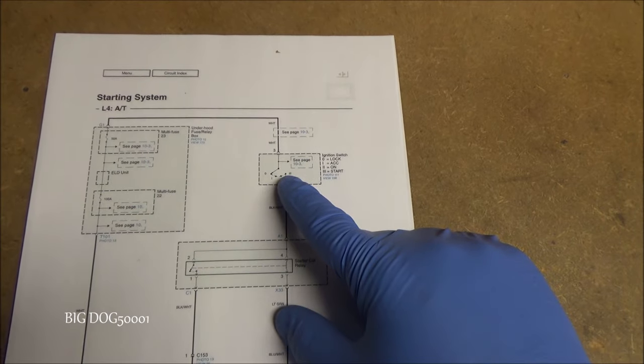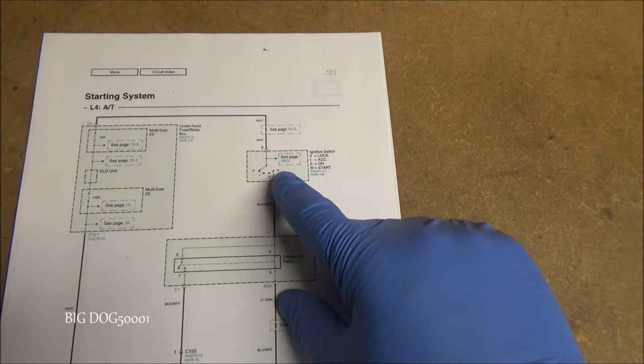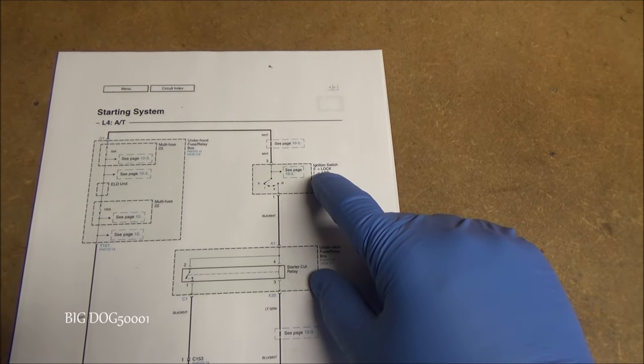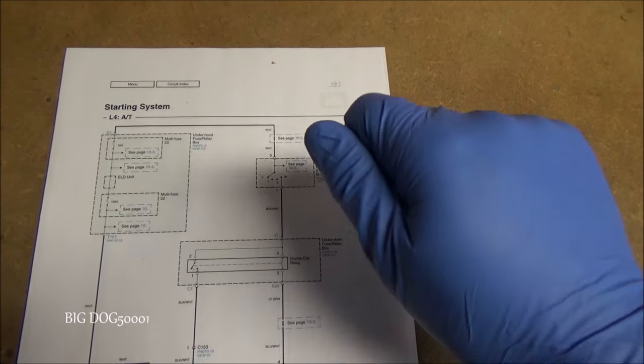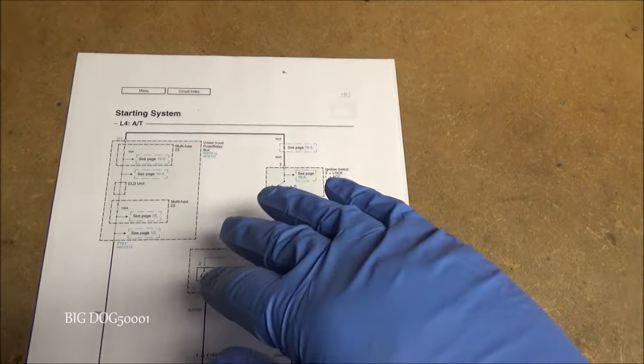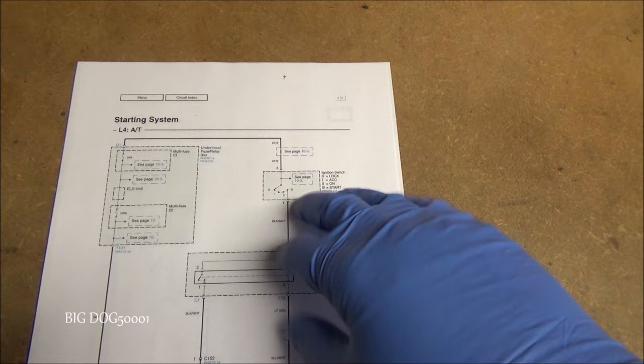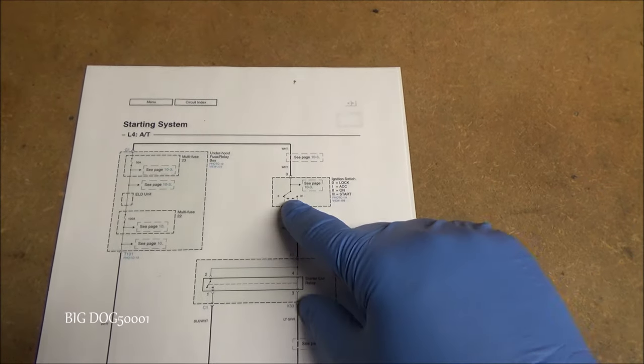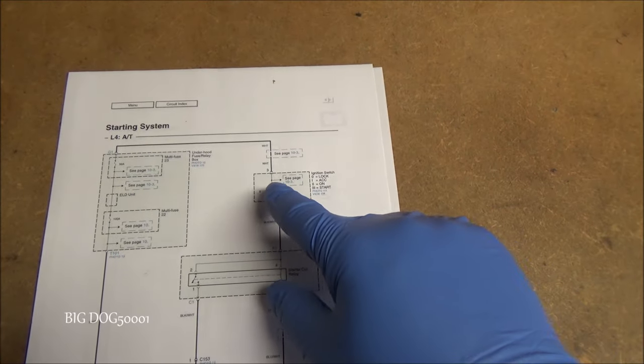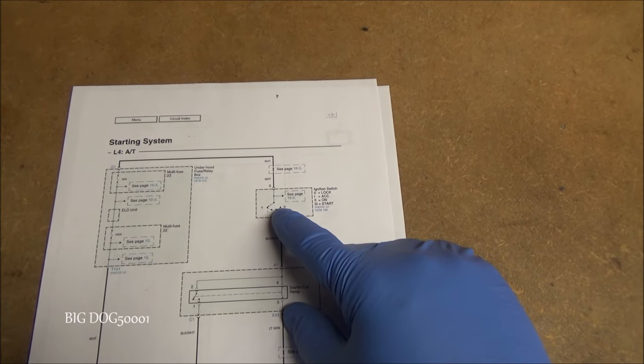As far as our ignition switches go, to cause a no start, it's more rare that that's going to happen. Usually in the number two position in the run position is where we see contact issues on an ignition switch on these Hondas. So you'll go to start it and it might start and when it pops back into the two position to run, then it'll die. So it can cause a start and then it'll idle real quick and then it'll die. Or you'll be driving the vehicle in the number two position, obviously running the vehicle and then all of a sudden it'll just die.